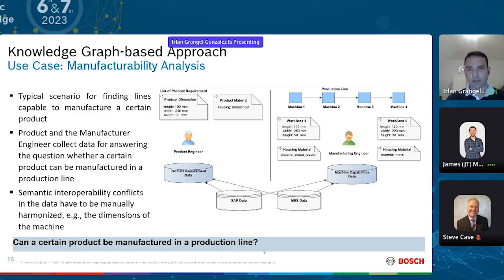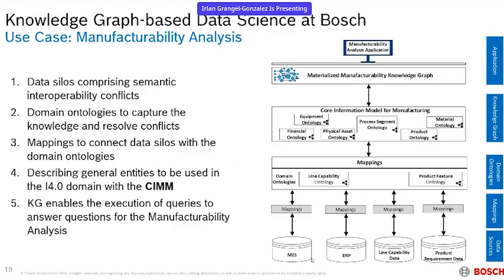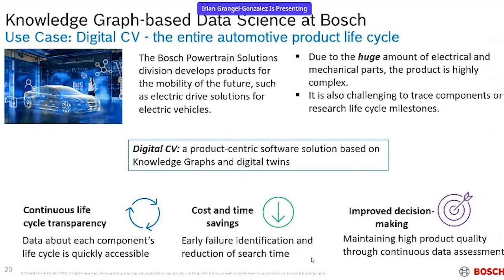This is one use case. Following this approach, we have the data sources, the domain ontologies, the mappings between data sources and domain ontologies, the Core Information Model for Manufacturing, and on top, the knowledge graph. Following this data-centric approach with ontologies, we managed to solve semantic interoperability conflicts and enable end users to get answers to questions they could not get before. And this is already in production today.